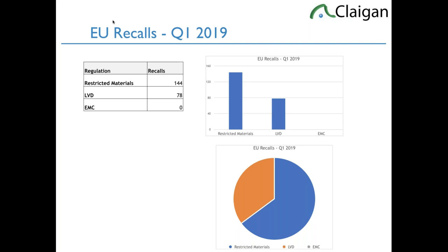Out of those recalls, about a third is RoHS, about a third is REACH restrictions, and about a third is POPs — primarily short-chain chlorinated paraffins — which are super common. This is a really useful slide when dealing with an executive who may not prioritize restricted materials. The recall risk is very significant and getting worse. Last year restricted materials just passed electrical safety; now it's almost two-to-one and accelerating.